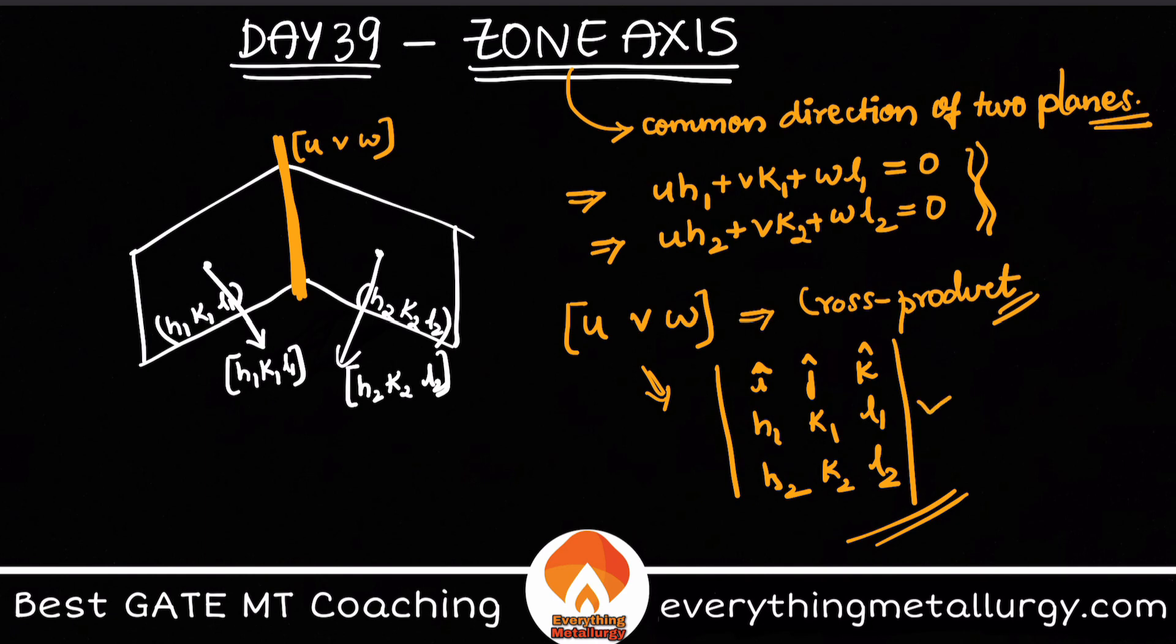So that means you can say that u v w which we are calculating using this vector algebra is nothing but the zone axis, because it is the common direction to two planes or you can also say it is a common direction perpendicular to both the plane normals. So I think you are able to connect it what I am telling, right?